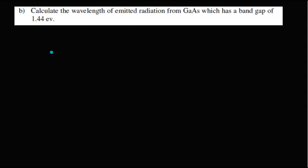Now let's come to the question. Calculate the wavelength of emitted radiation from gallium arsenide which has a band gap of 1.44 electron volts. That means what is the data given here? Lambda equals how much? We have to calculate. Energy band gap given is Eg equals 1.44 electron volts.